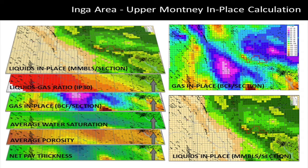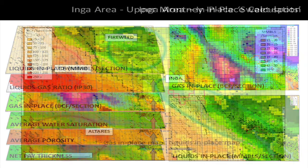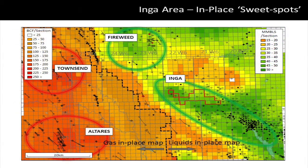Here we have the exact same process, this time looking at in-place numbers for the upper Montney zone. Adding those maps together, we find ourselves with an in-place sweet spot map. I've spliced two maps together showing our liquids-in-place map on the east side of the map frame — the high liquids area — and the gas-in-place map on the western side, which is the more gas-prone part of the fairway.